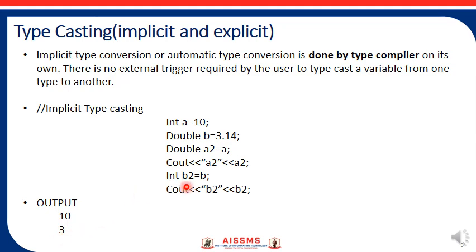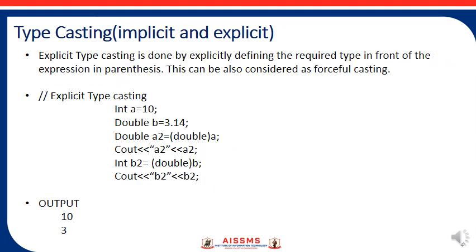This happens because the destination is integer — we are converting from a bigger data type to a smaller data type. Double requires more memory than integer, so it just stores the integer value as 3. This concept is implicit type casting. The next is explicit type casting, which is done by explicitly defining the required type in front of the expression in parentheses — it does not happen automatically, so the user needs to declare the destination data type.